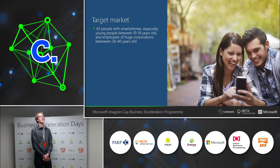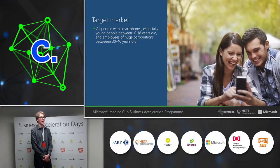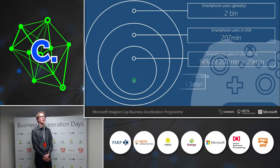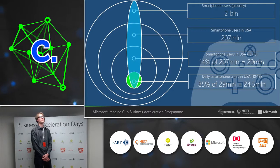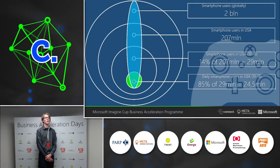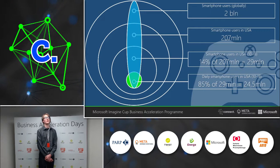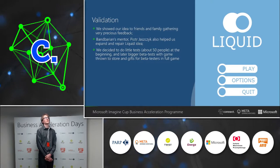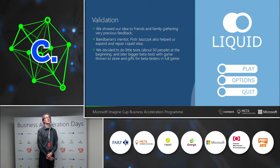The target audience is people with smartphones — everyone who has a smartphone can download the app, play it, and pay for it. We especially think about young people because they are most interested in games and in comparing scores. As you can see on this slide, there are about 2 billion smartphone users worldwide, and in the USA about 207 million people. Kids aged 10 to 18 represent 13 percent of that number.